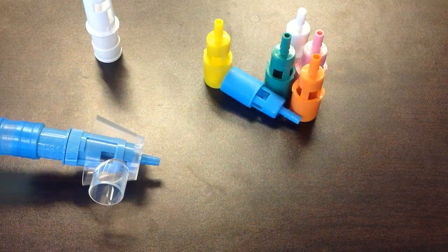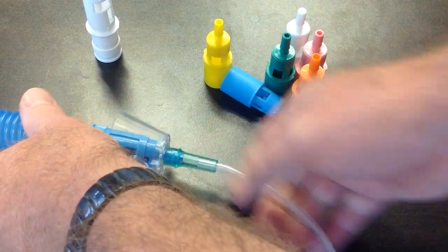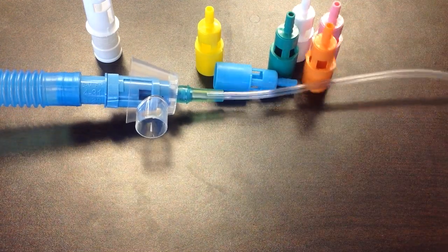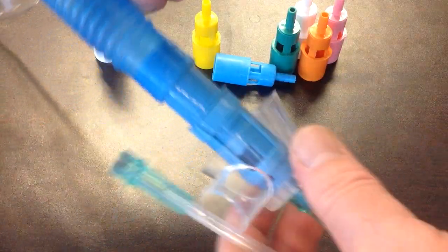And then here you take your oxygen tubing, hook it to this end, and the other end would get hooked to your flow meter.